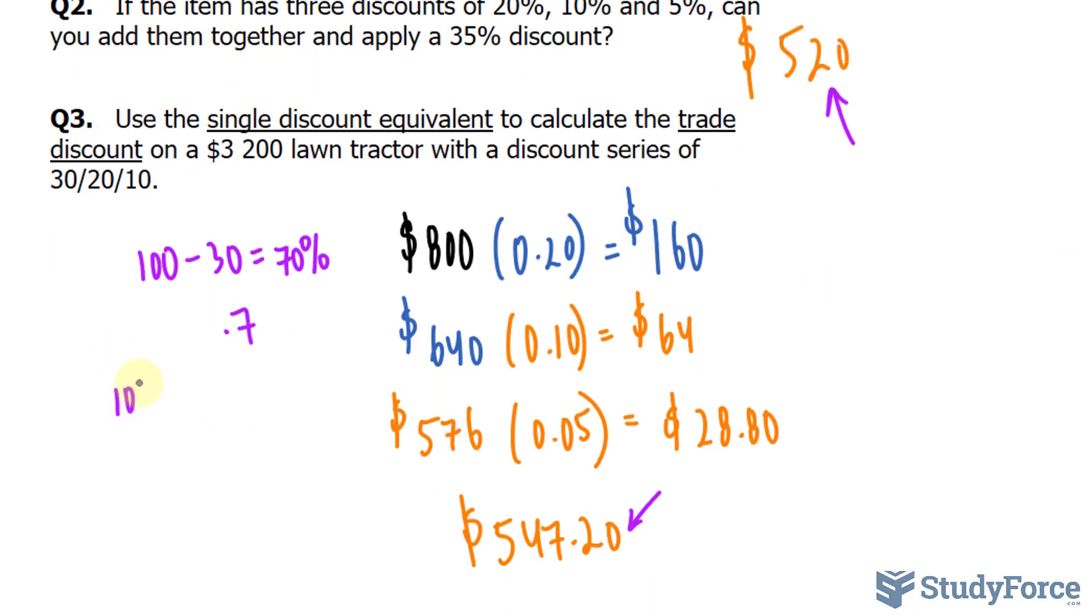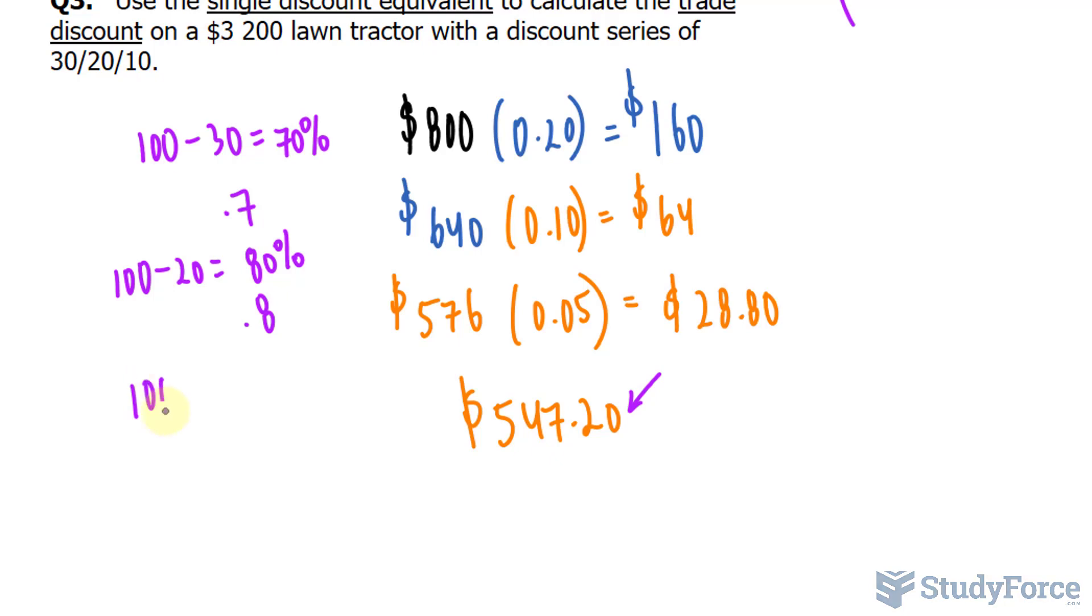So 100 minus 20 is equal to 80%, and the decimal version of that is 0.8. And finally, 100 minus 10 gives us 90%. The decimal version of this number is 0.9.